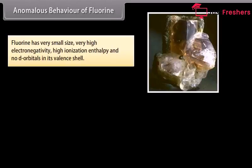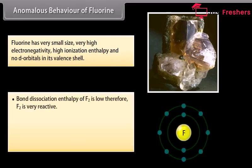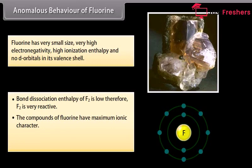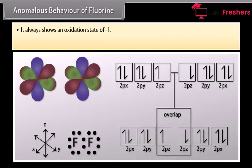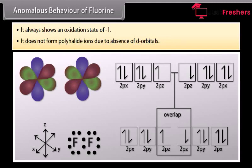Fluorine has very small size, very high electronegativity, high ionization enthalpy and no d-orbitals in its valence shell. It exhibits some different behavior from other elements: bond dissociation enthalpy of F2 is low, therefore F2 is very reactive. The compounds of fluorine have maximum ionic character. The hydride of fluorine is liquid due to intermolecular hydrogen bonding. It always shows an oxidation state of minus 1, and does not form polyhalide ions due to the absence of d-orbitals.